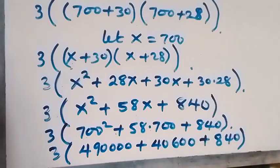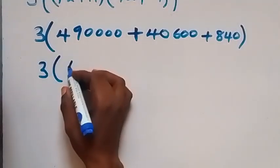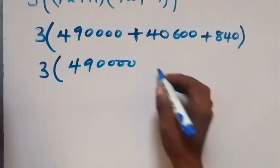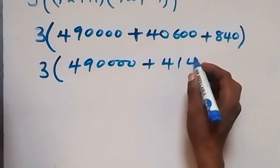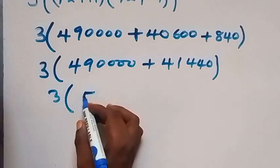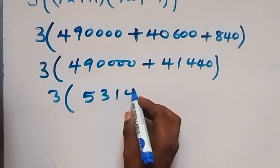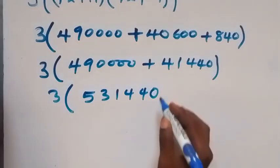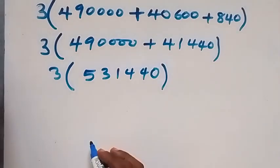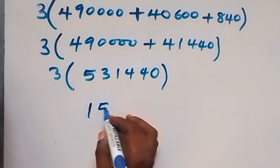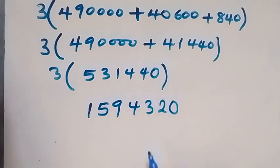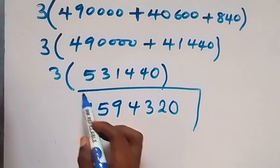Then we have 490,000 plus 40,600 plus 840, which gives us 531,440 inside the bracket. Then when we multiply by 3, we have our final answer of 1,594,320 for this given problem.